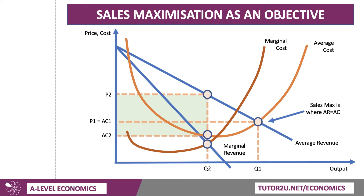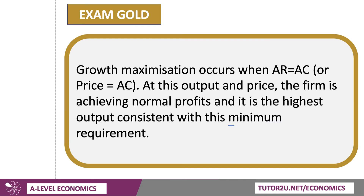Hopefully this diagram is useful in terms of understanding which bits to draw correctly. Growth maximisation occurs when average revenue equals average cost, or price equals average cost. At this output and price, the firm is achieving normal profit — that's the minimum profit they need to stay in an industry in the long run, so it's the highest output consistent with that requirement.